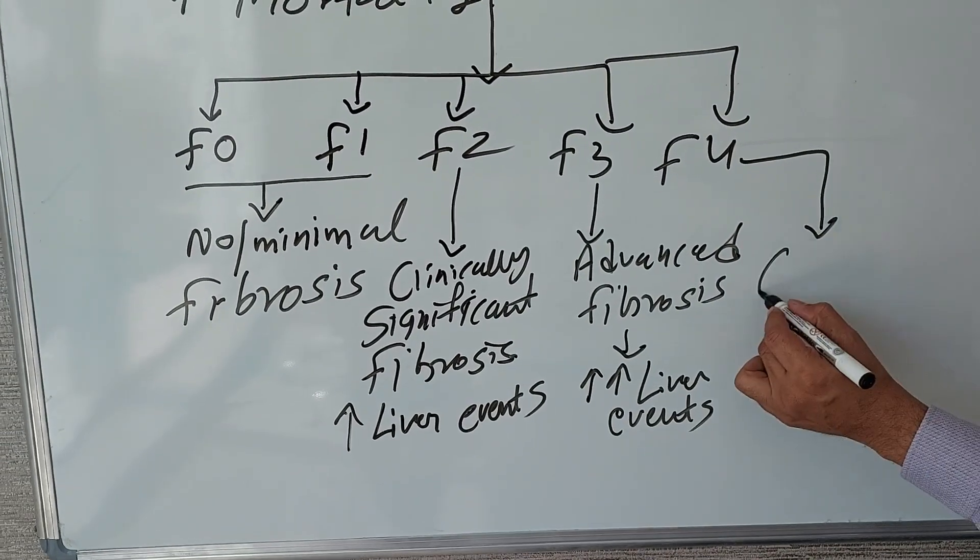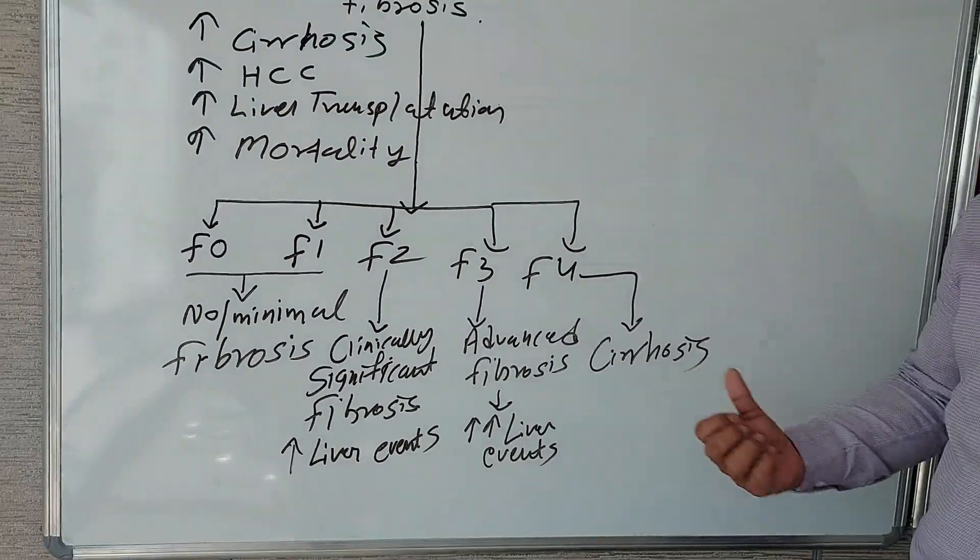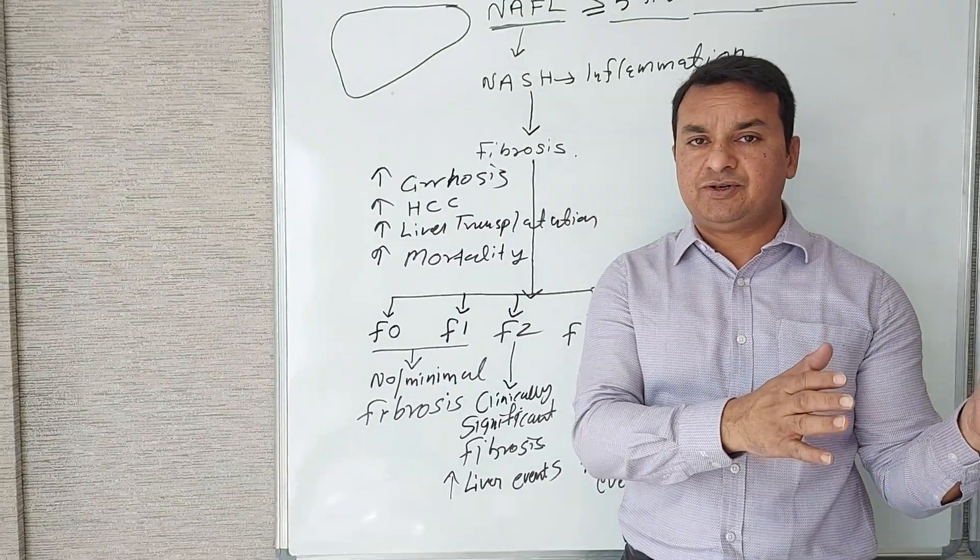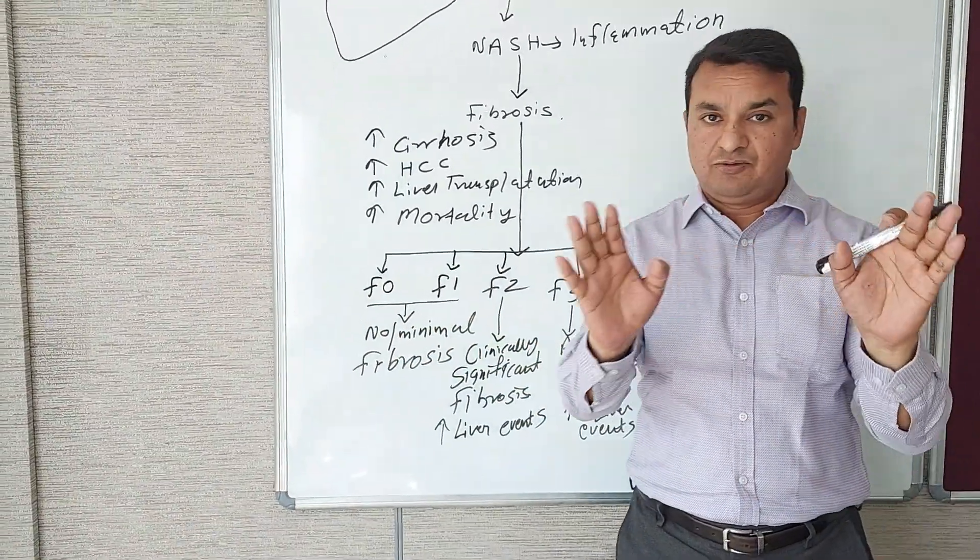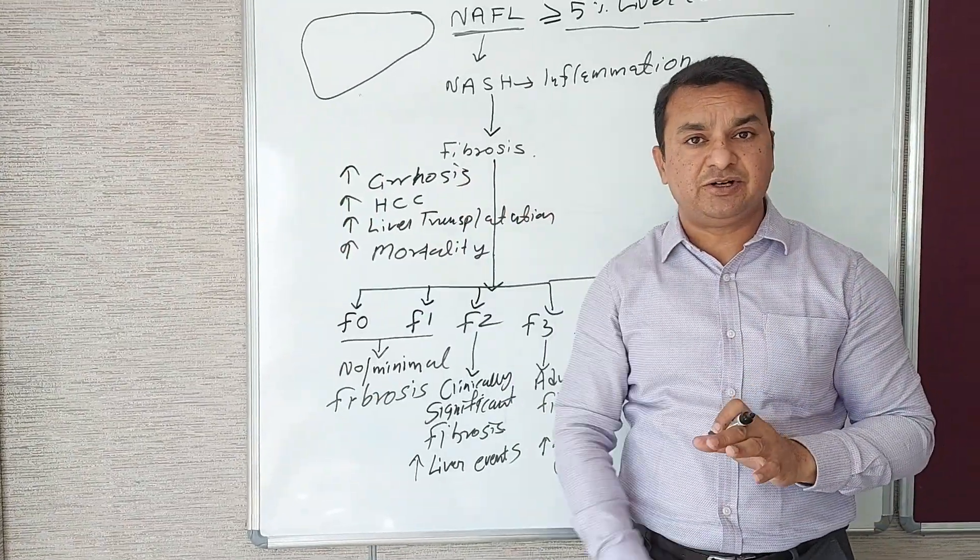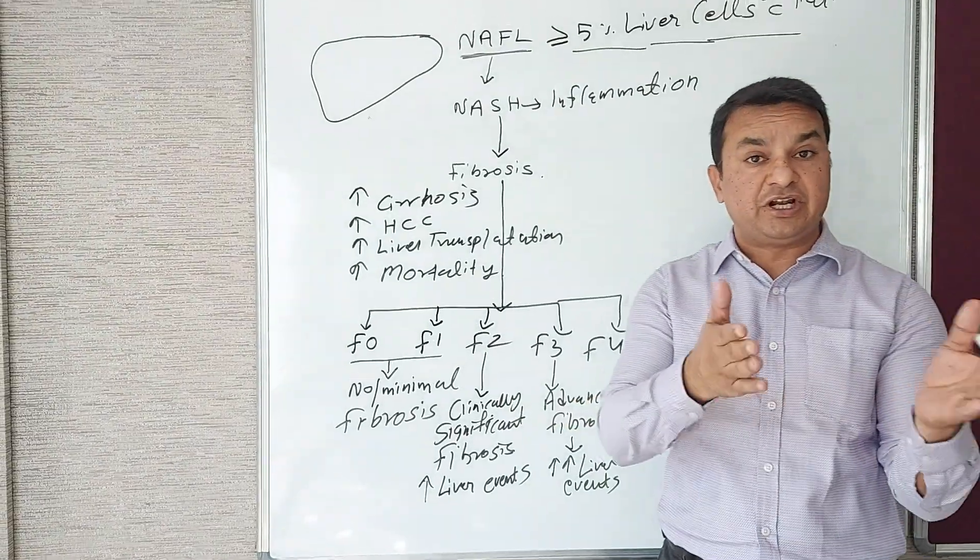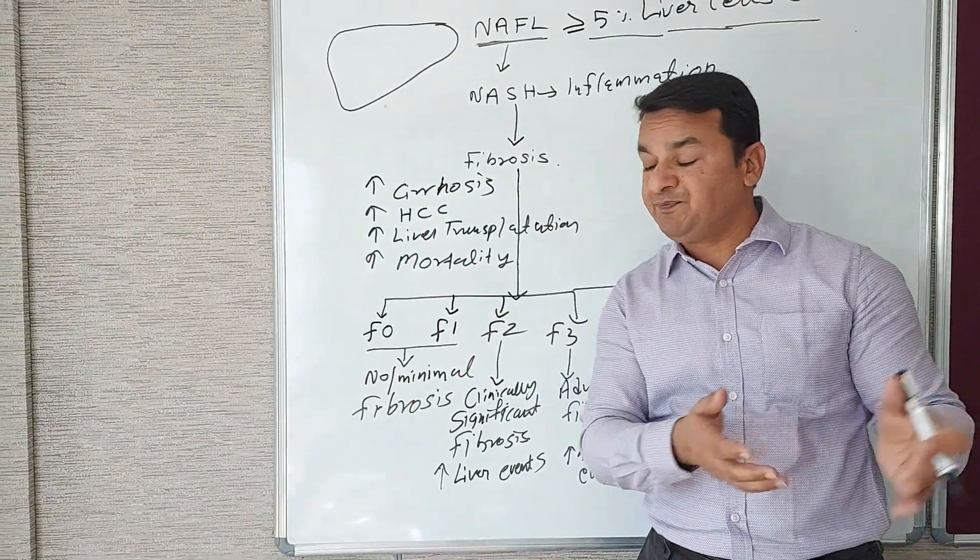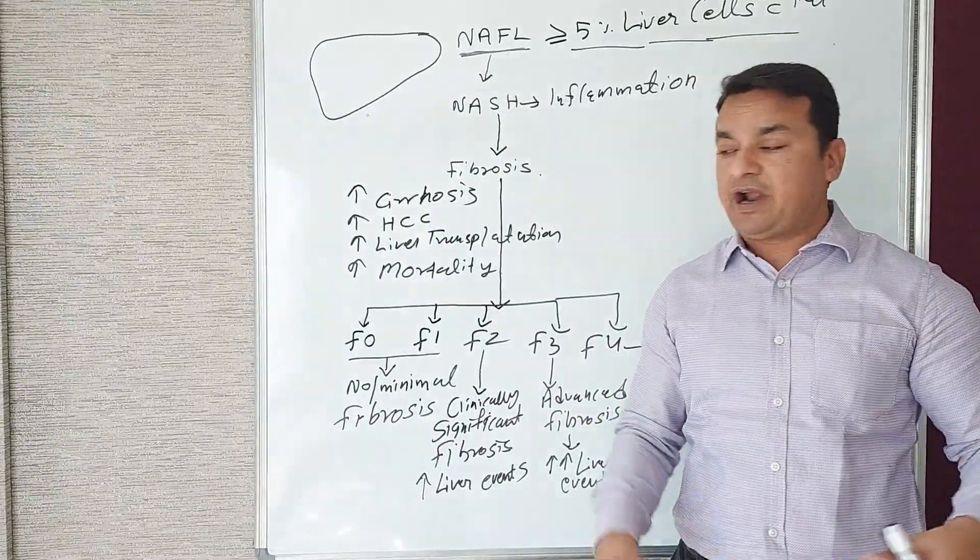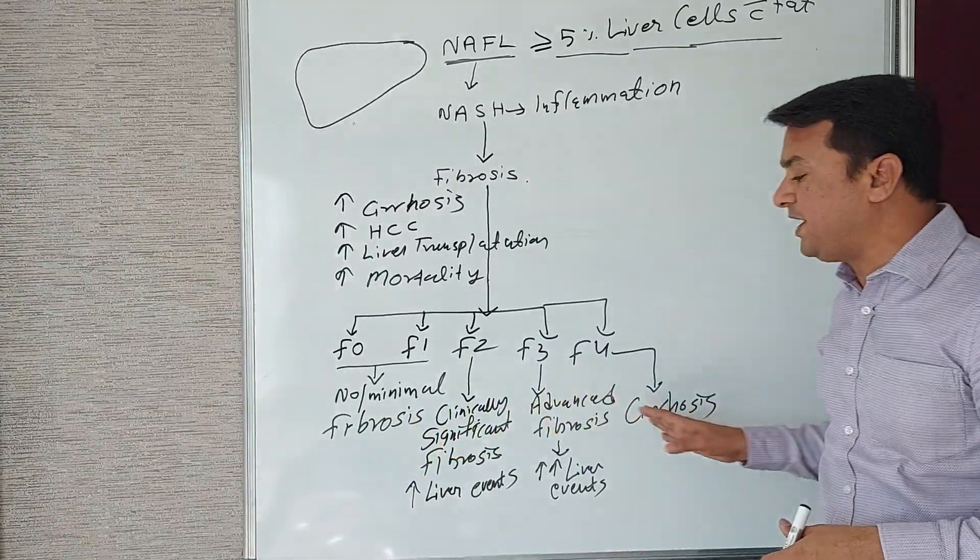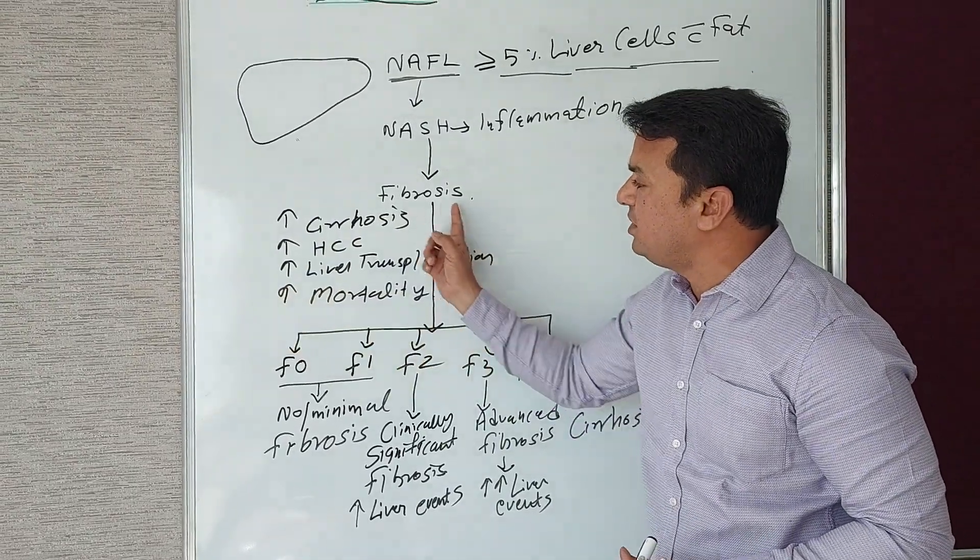fibrosis has already progressed to the advanced stage and there is a very high risk of liver-related events. F4 means the patient is already in big trouble because cirrhosis has already taken place. So, if a patient has NAFLD with F0-F1, very good—manage the risk factors: dyslipidemia, diabetes, blood pressure, obesity, etc. F2 means clinically significant fibrosis has started. F3 means advanced fibrosis. F4 means cirrhosis. As you move